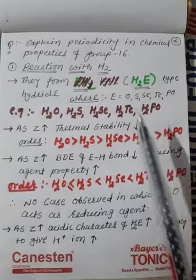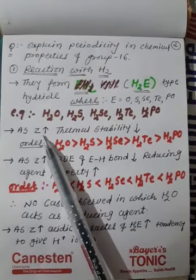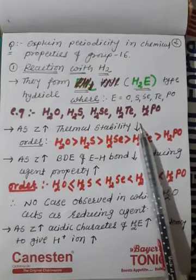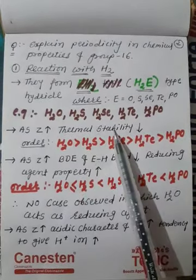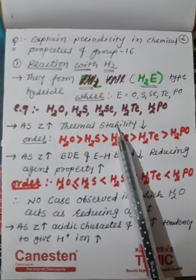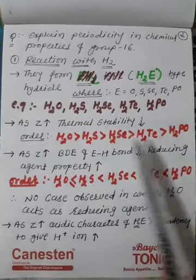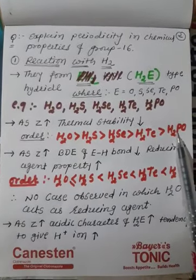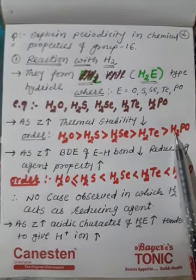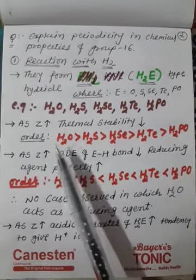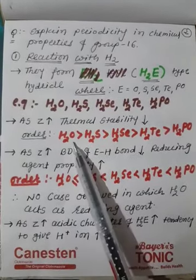Now we discuss periodicity. As atomic number increases, thermal stability decreases. The stability of a hydride with respect to heat is called thermal stability. Water (H2O) has the highest thermal stability, while hydrides of tellurium and polonium have the lowest. This is the decreasing order; you can also write the increasing order.